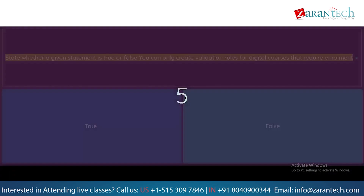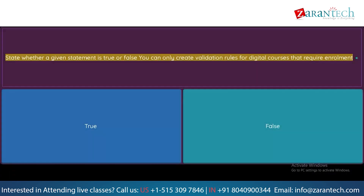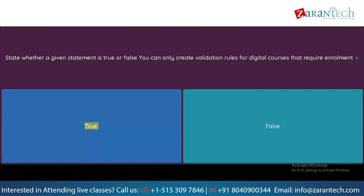Question: State whether the given statement is true or false. You can only create validation rules for digital courses that require enrollment. Option 1: True. Option 2: False.